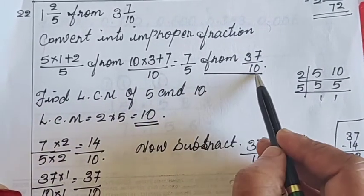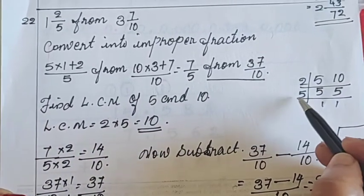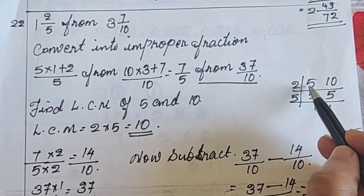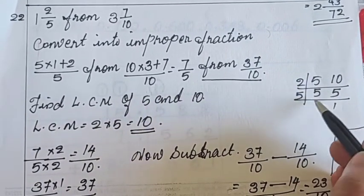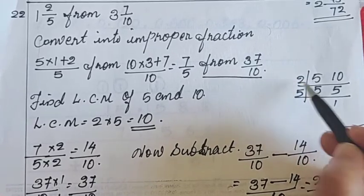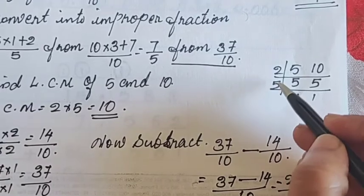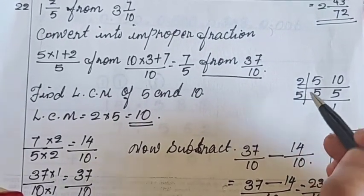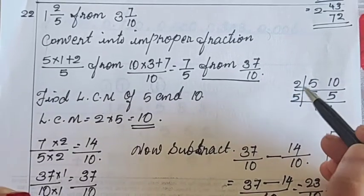Now find out the LCM of 5 and 10. Same common division method we will find the LCM. Using 2 we can divide. That means 2 is a prime number. Only take prime number. Don't forget to use prime number. If you take composite number, your answer will be wrong. Keep this point in your mind. Take only prime numbers.